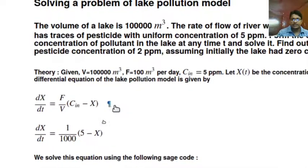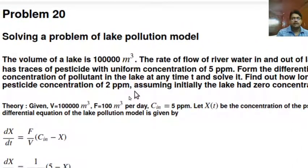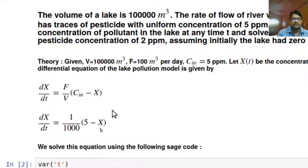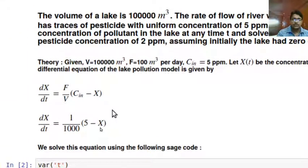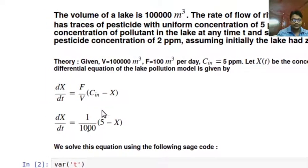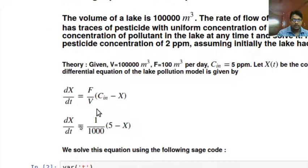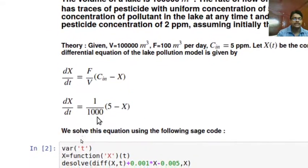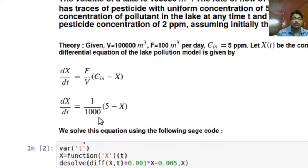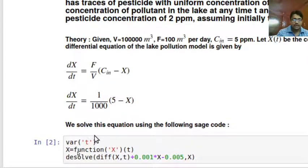What will be our initial condition? Initially the lake had zero concentration of pesticide. That means X(0) equal to 0. At t equal to 0, X(t) is 0, that is the initial condition. Now let us substitute the values of F and V. We immediately get dX/dt equal to 1/1000 multiplied with (5 minus X).